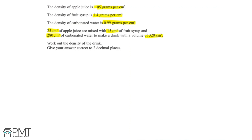We need to find out the density of the drink, giving our answer correct to two decimal places. The first thing we need to do is make sure that we know the formula for density. Density is given by the mass divided by its volume.